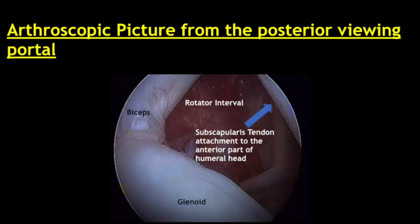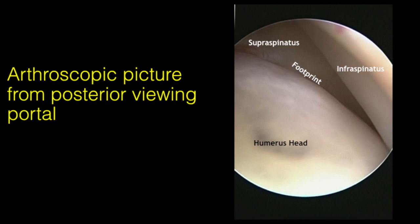Before ending, a little bit about how these tendons look arthroscopically. There are pictures from an orthopedic colleague taken from the posterior viewing portal. Arthroscopically in the intra-articular location, the tendons are not delineated as separate structures due to the capsule. However, viewing carefully, we can see the anterior and posterior fibers and understand where the supraspinatus is and where the infraspinatus begins. The tight structure along the boundary is the subscapularis. We also see the intra-articular biceps and the conoid-glenoid. The footprint area is only exposed when there is a tear.